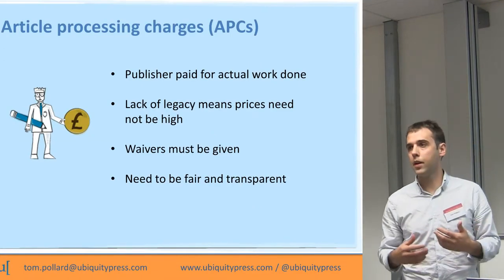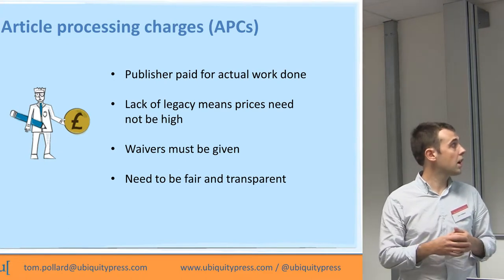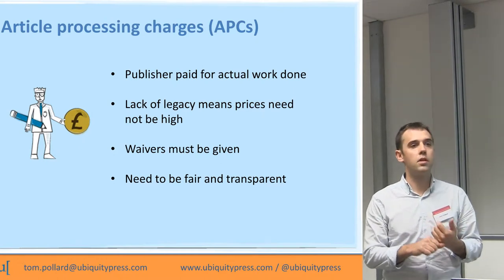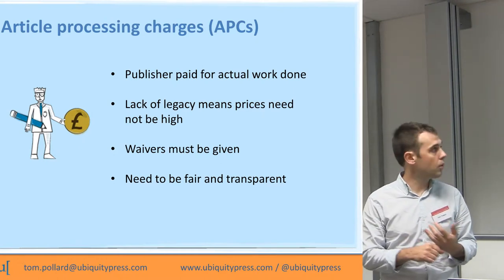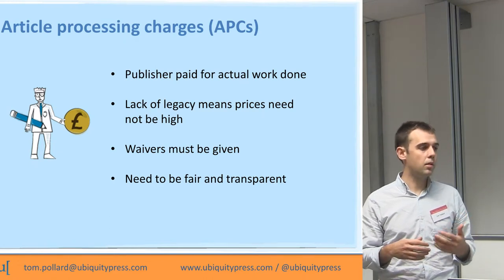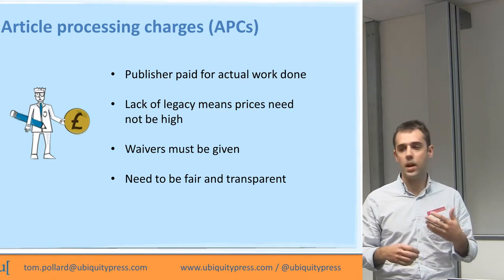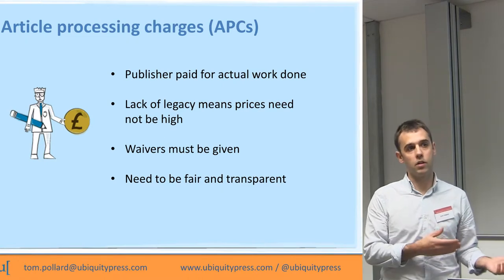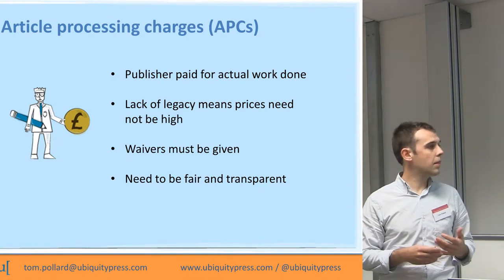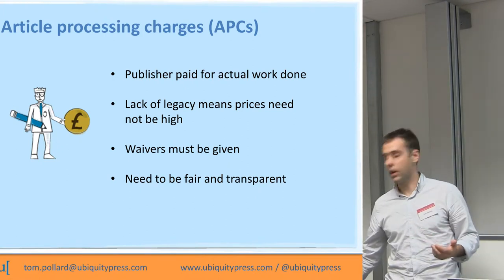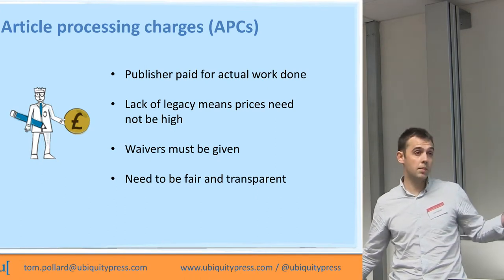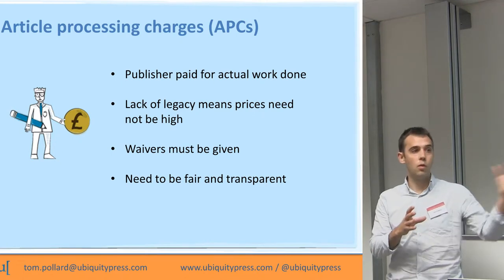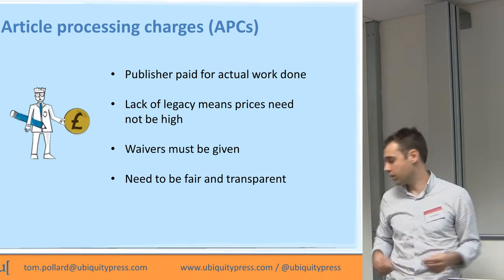There are different models for funding open access publications, but we decided to go down the route of article processing charges. This means the publisher is paid for the actual work that we do. Our lack of legacy means we can keep prices low. We build into our model a way of giving waivers to researchers in countries that can't afford processing charges, and we understand that we need to be fair and transparent about our costs. One really nice thing about processing charges is that you can start comparing the costs of different journals and deciding whether a more expensive journal is really worth the extra money.